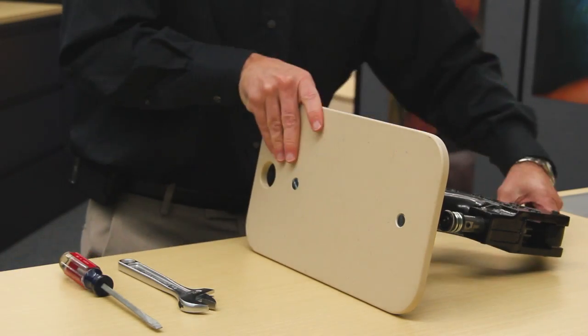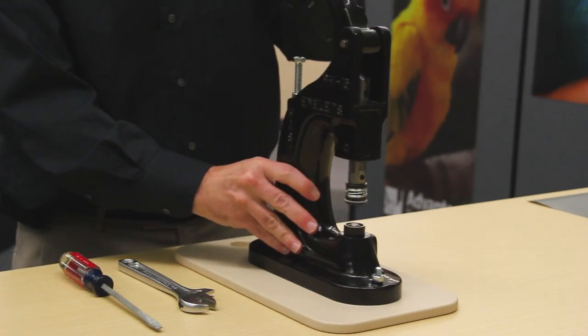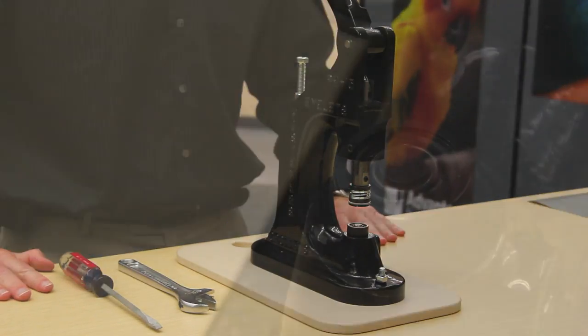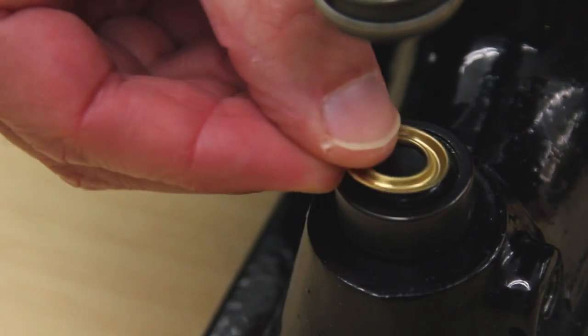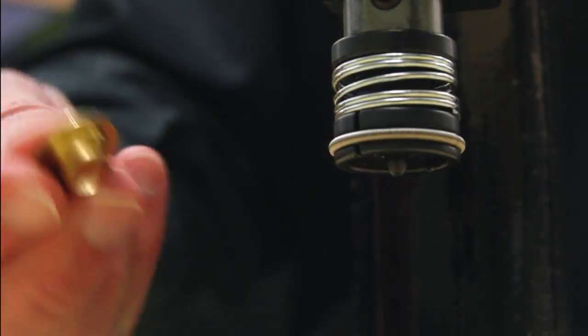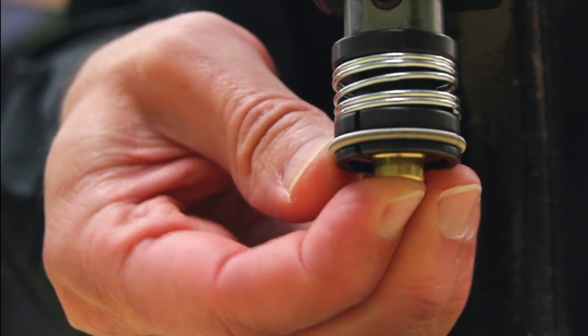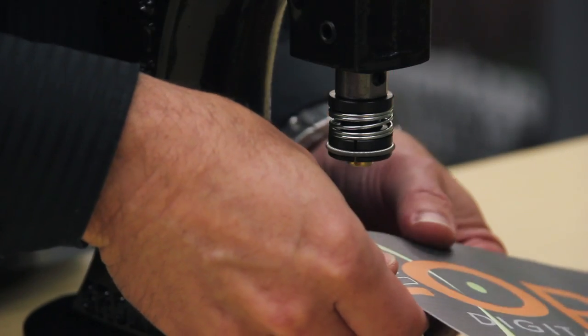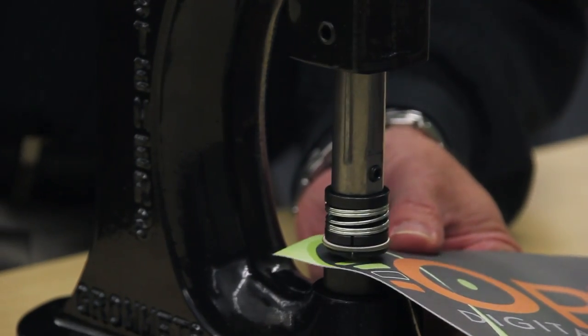Flip the unit over and we are ready to test the press. Next, we will want to make sure the grommets will set properly. Take your number two washer and place it into the washer die. Take your number two grommet and snap it into the grommet die. Place your banner into the grommet press and apply downward pressure.